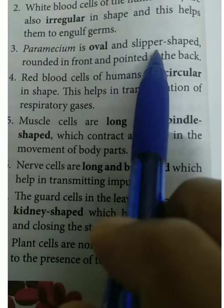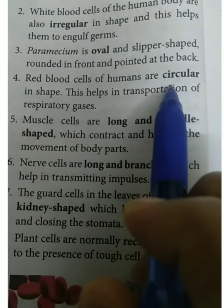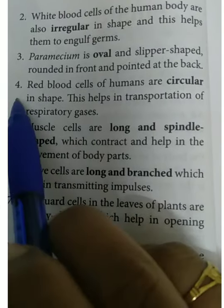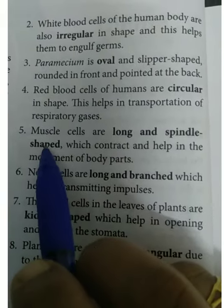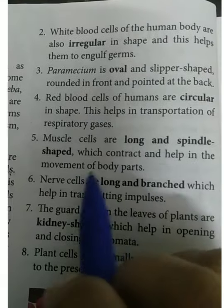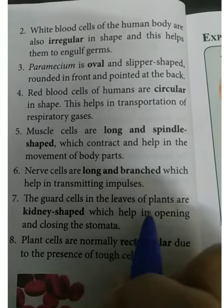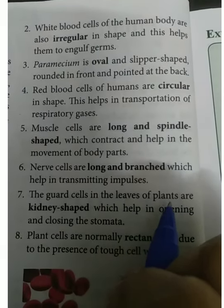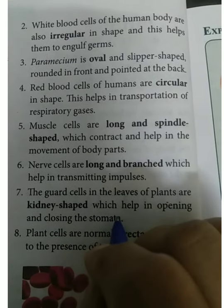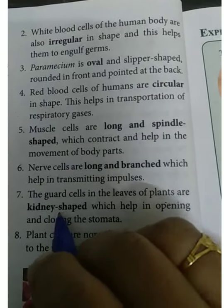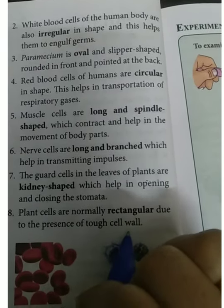Paramecium is oval and slipper-shaped, rounded in front and pointed at the back. Red blood cells of humans are circular in shape, while white blood cells are irregular in shape. Muscle cells are long and spindle-shaped, nerve cells are long and branched, and the guard cells in the leaves of plants are kidney-shaped. The openings in leaves are called stomata and are surrounded by guard cells. Plant cells are normally rectangular due to the presence of a tough cell wall.